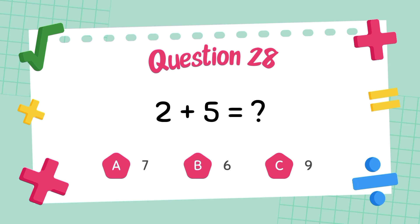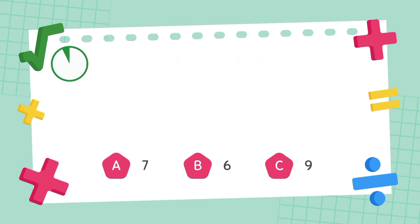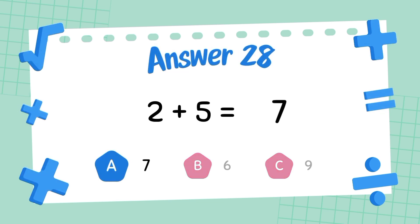What is two plus five? The answer is ten.